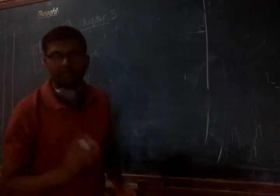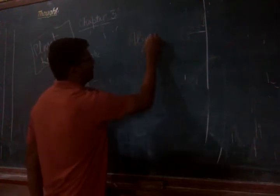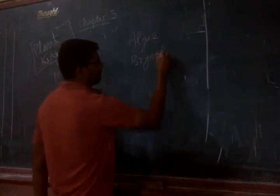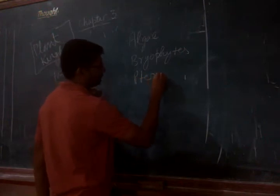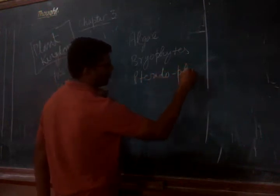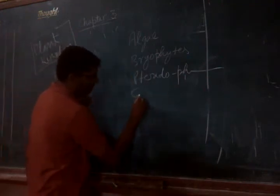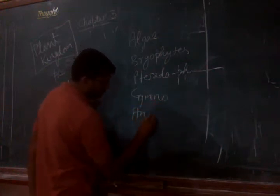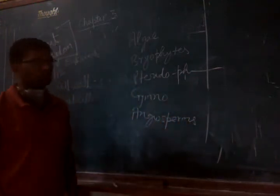As I have told you, there are different categories of plants — algae, then there are bryophytes, then pteridophytes, then gymnosperms, and then angiosperms. So in this chapter we will study all of them in detail.